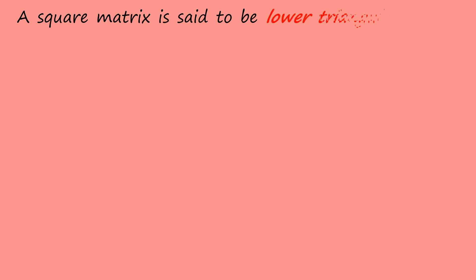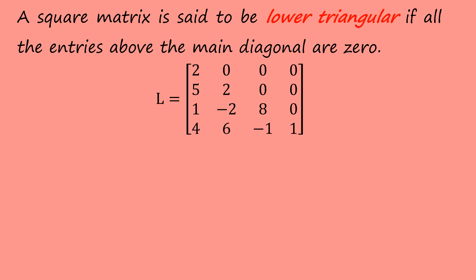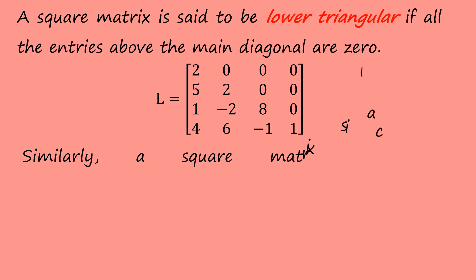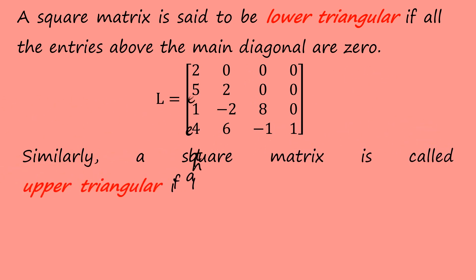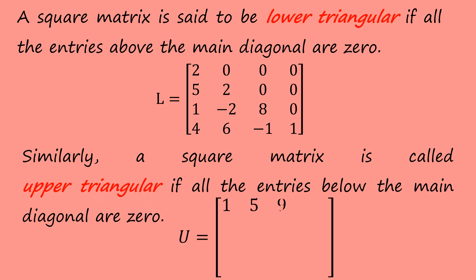A square matrix is said to be lower triangular if all the entries above the main diagonal are 0, denoted by L. A square matrix is called an upper triangular matrix if all the entries below the main diagonal are 0, denoted by U.